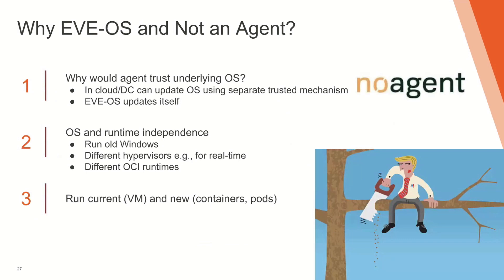So, why do we need an OS and not just an agent? Everybody else does this with an agent. Agents work fine in the data center because somebody else is worried about the infrastructure and has secured all of that. If they need to replace the underlying Ubuntu or CentOS, they can just PXE-boot the machine using a secure management network in the data center. Here, we have the problem of being able to replace the branch we're sitting on — you can't do that with an agent and still have confidence in the resulting reliability and security of the system. EvoOS updates itself.